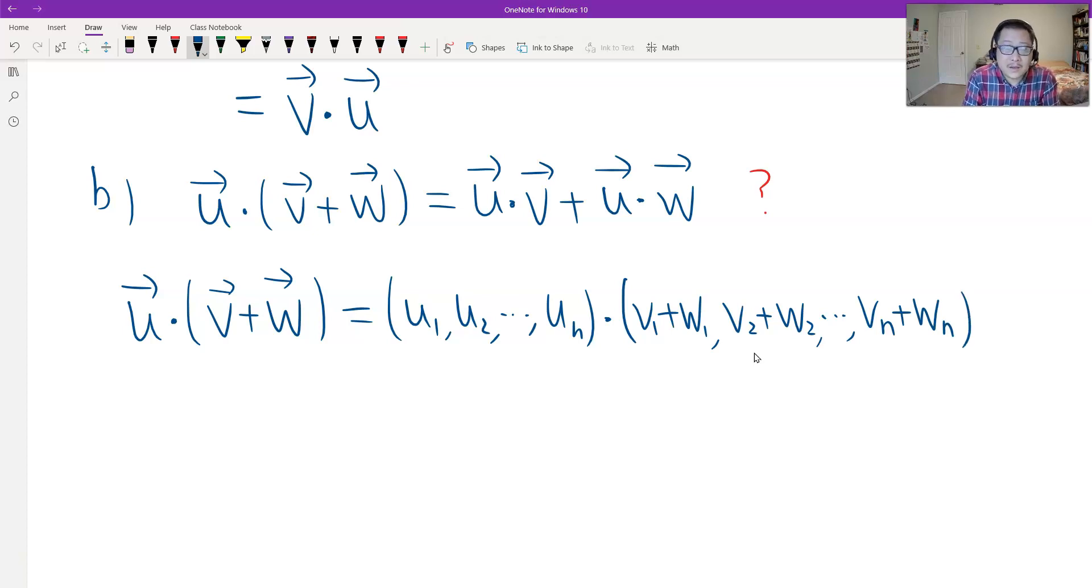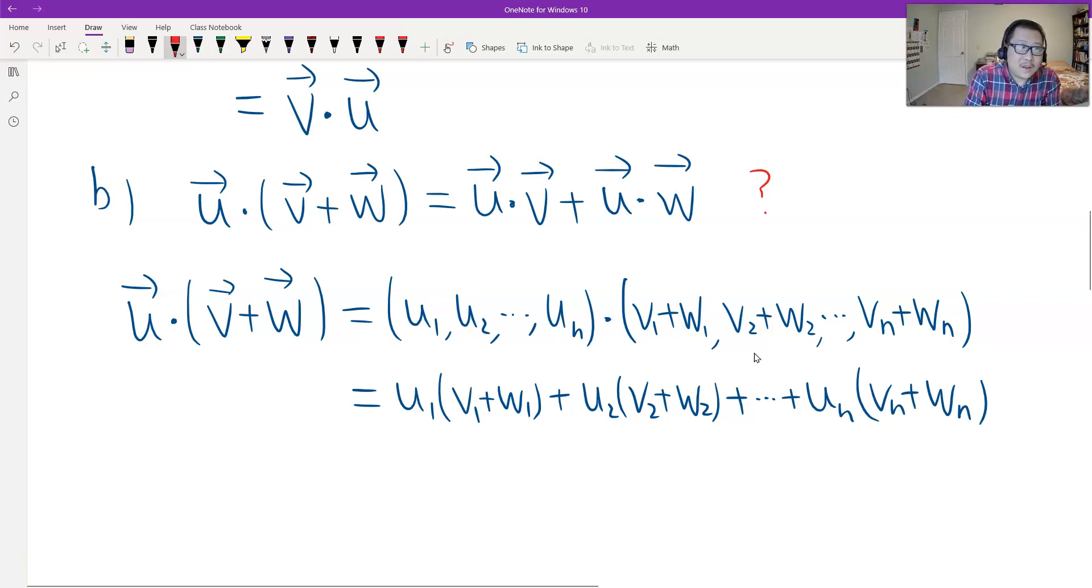Dot product is the sum of products. Which is U1 (V1 plus W1), and then U2 (V2 plus W2), and then goes on. UN (VN plus WN), and then you know we can distribute it. Because these are numbers.